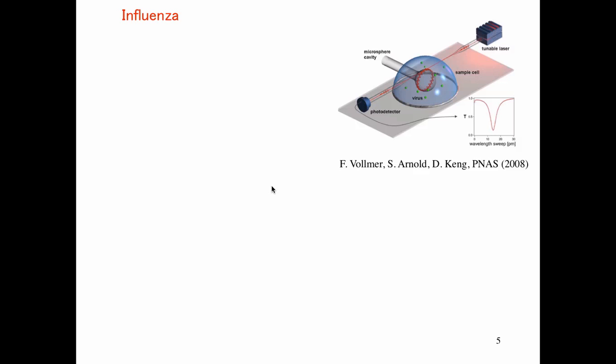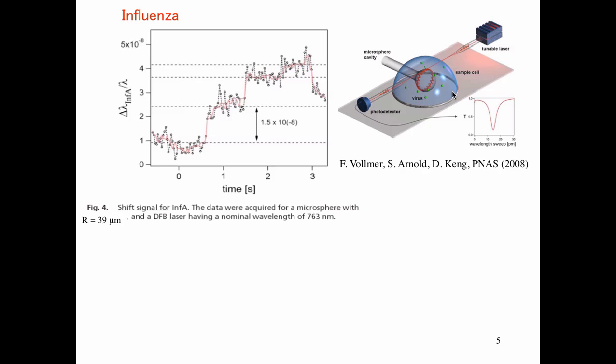Well let's see what we found. We started the work on influenza virus. The work was done by Frank Vollmer doing experiments. I did theory and David Kang participated in both. Frank set up this wonderful microfluidic cell, very elegant. Immediately upon lowering the radius to 40 micrometers he began to see steps in the wavelength shift.